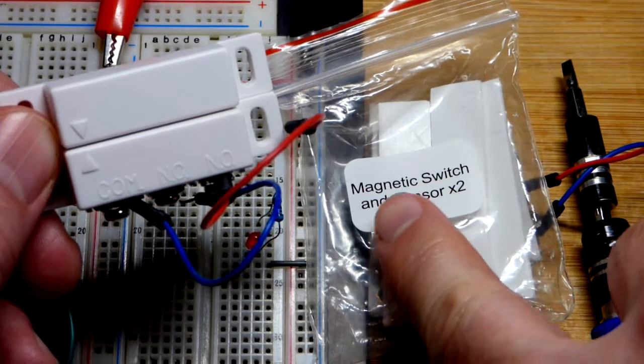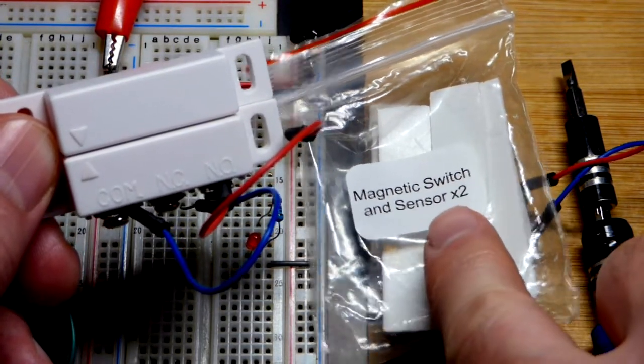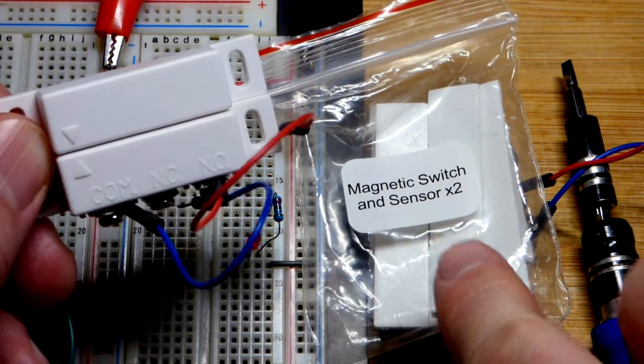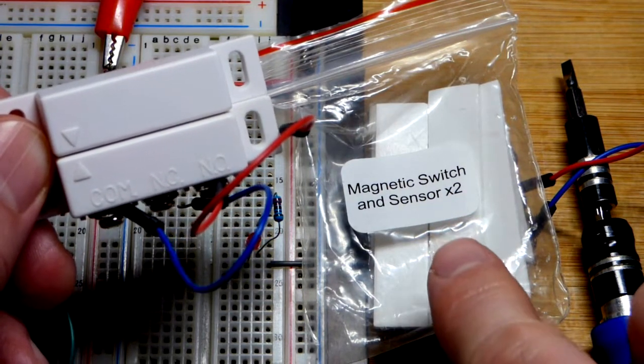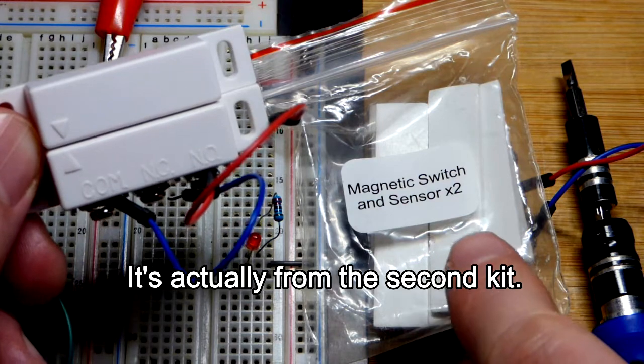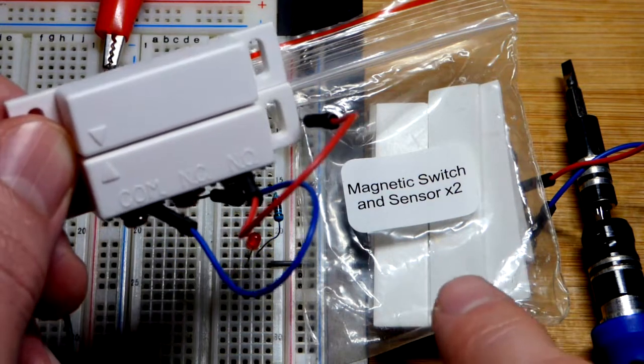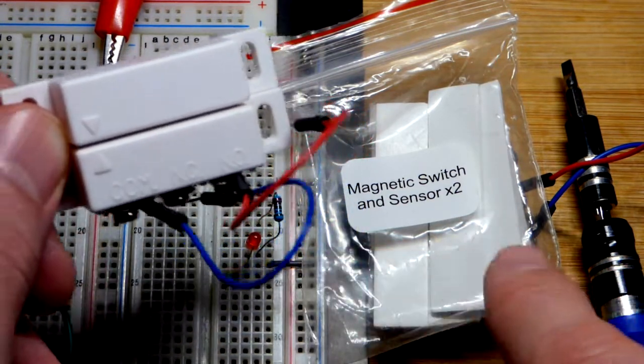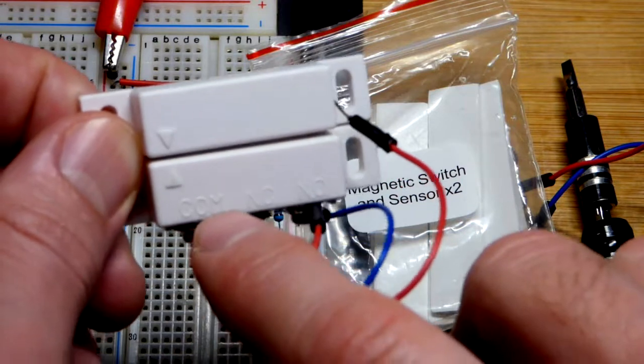So now in this video we're going to look at the magnetic switch and sensor that I have. I got this from the Make Electronics kit, I think it was the first one. But they updated the kit and I don't even know if they sell it anymore. I bought it many years ago so I don't usually talk about that kit too much.